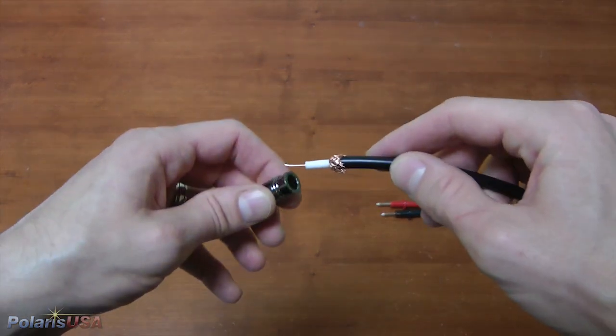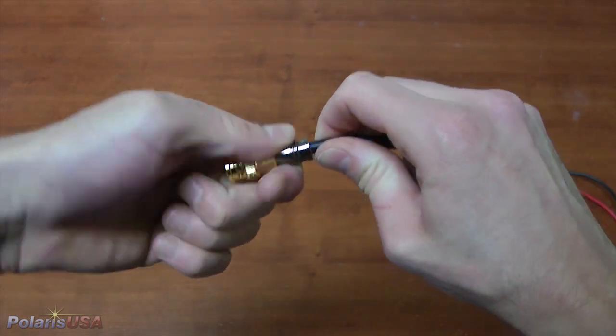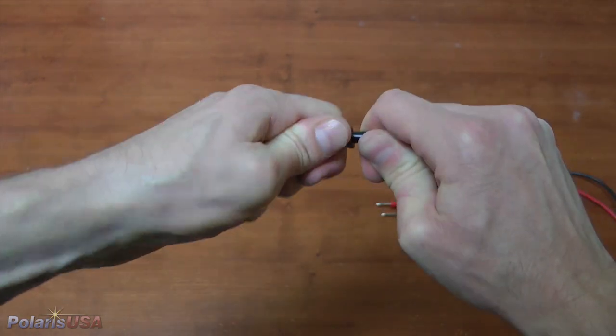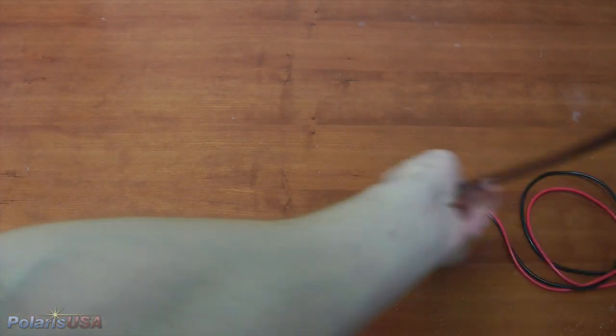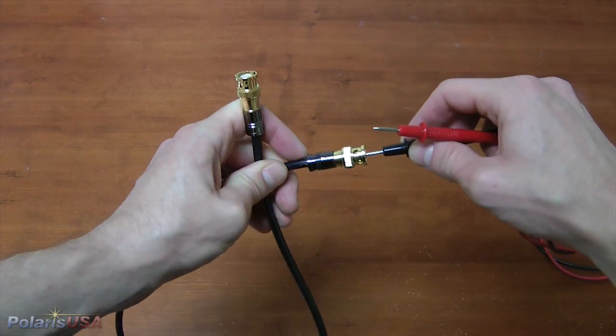I will now insert the cable into the connector, again making sure that the center post drops all the way down into the post hole, which I will then verify again with a simple continuity check from post to post.